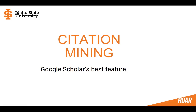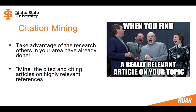I'm going to talk about a cool search — a way of searching that is really helpful and totally different than what we've talked about so far. It's the best feature of Google Scholar and it can save you so much time. It's called citation mining, but the concept is actually quite simple. It's really just taking advantage of the research and literature searching that others in your area have already done. What we're going to do is learn how to mine the cited and citing articles on highly relevant references that you find.